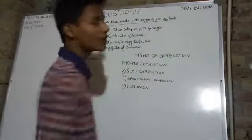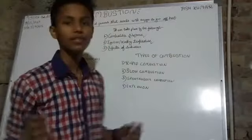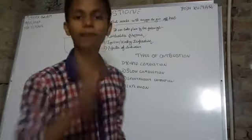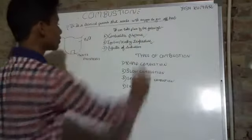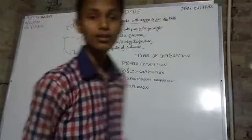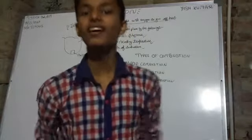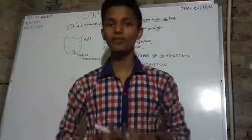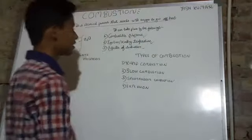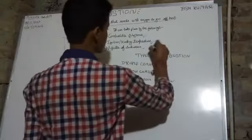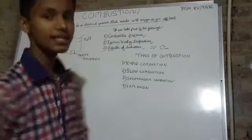The second thing is the ignition temperature — the lowest temperature where any substance starts burning. The third thing is the supporter of combustion — any substance that helps in combustion is called a supporter of combustion. An example is O2, oxygen, which is the supporter of combustion.